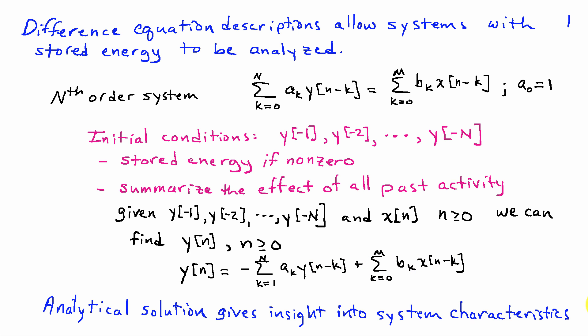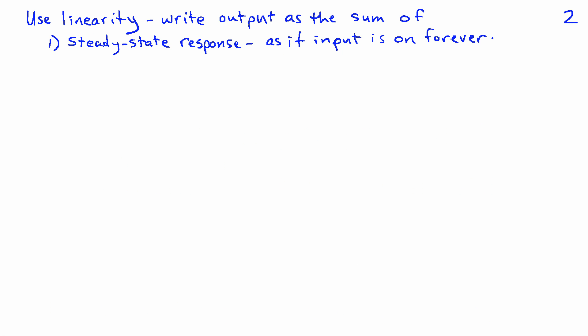While difference equations are used primarily in signal processing for computing outputs of linear time-invariant systems used as filters, an analytical solution gives us a lot of insight into the nature of the system characteristics and what the key properties are that determine its response. To derive our analytical approach, we're going to use the property of linearity, since this is a linear time-invariant system, and we're going to write the output as a sum of two terms.